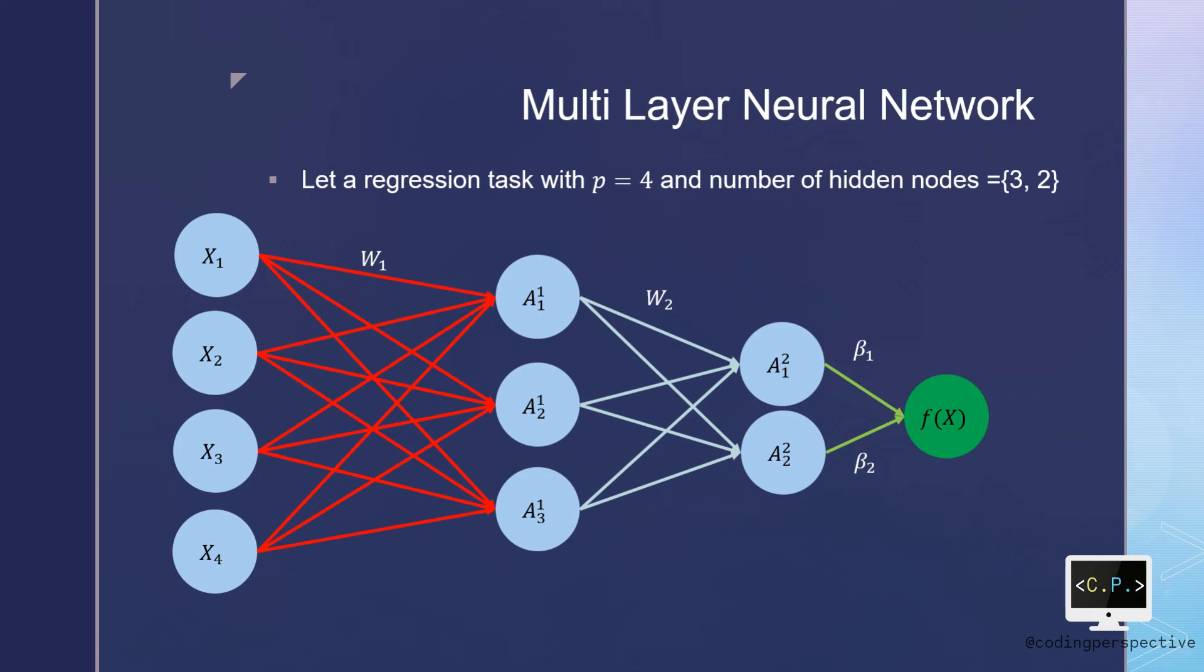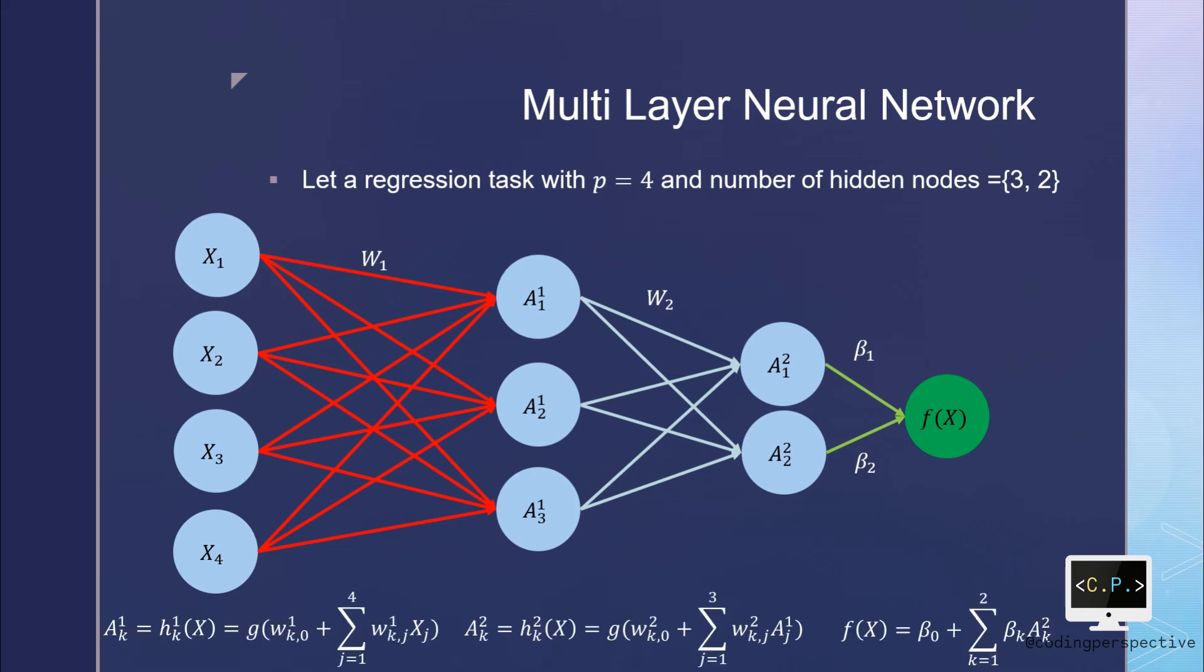Let us go from output to input layer. The model calculates fx as beta 0 plus beta k times ak, summed over k's. According to the model, each ak2 is calculated as w2k0 plus w2kj times a1j, summed over j's.